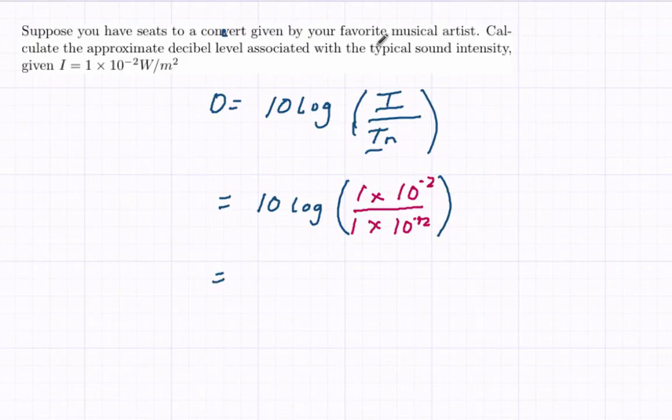Now comes the simplification. Remember that when you divide two numbers with the same base, you subtract their exponents. So we have 10 times the logarithm, and it's going to be 1 times 10 to negative 2 minus negative 12, which is negative 2 plus 12. That simplifies to 1 times 10 to the 10th.